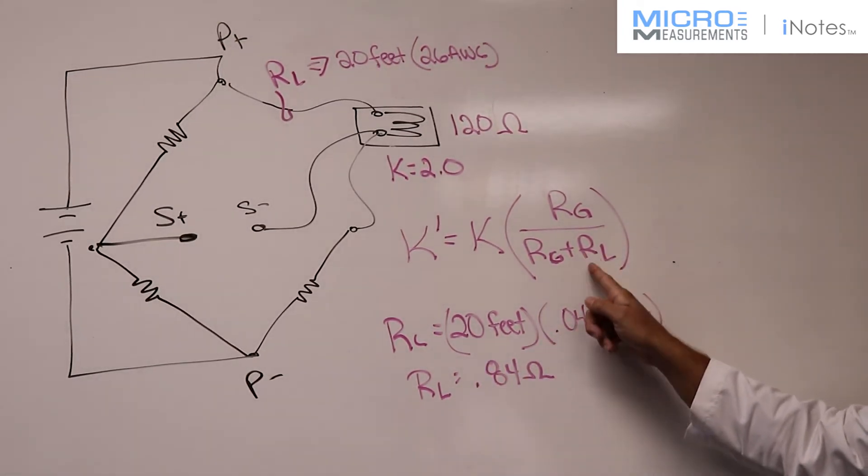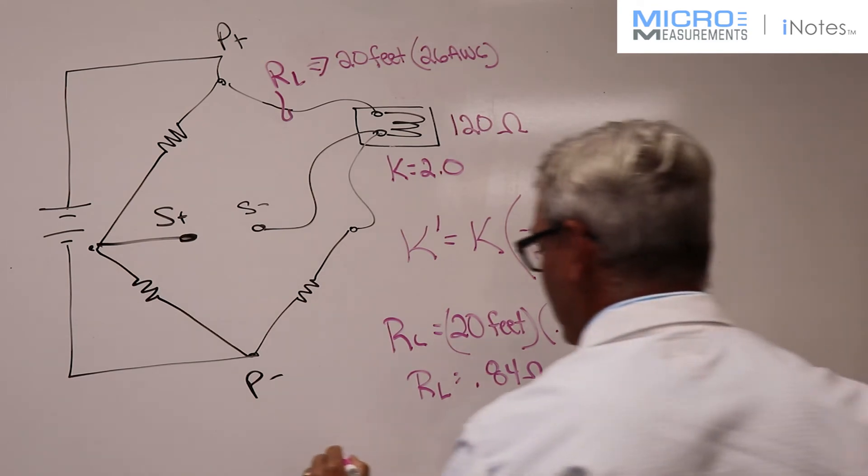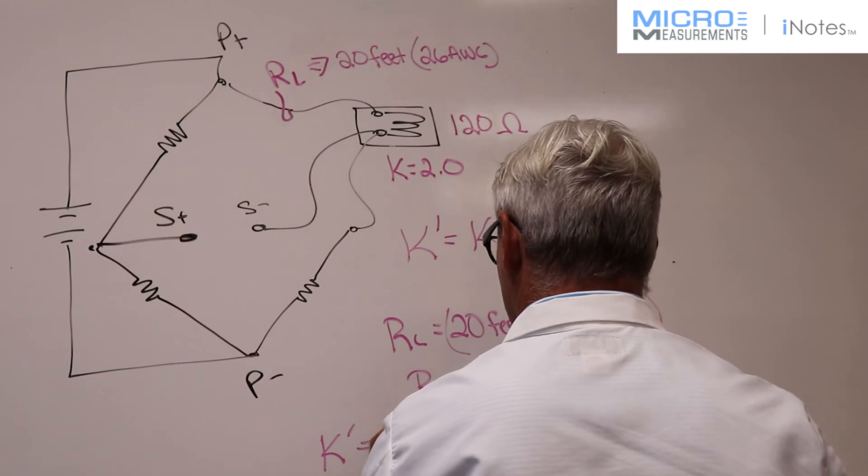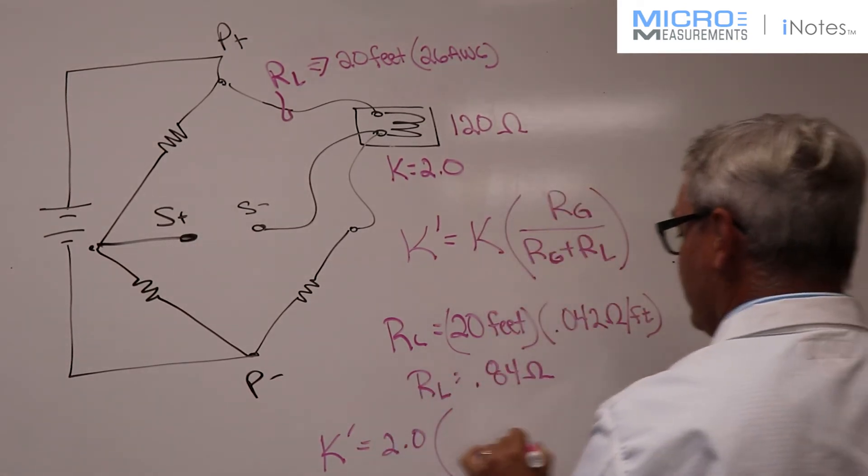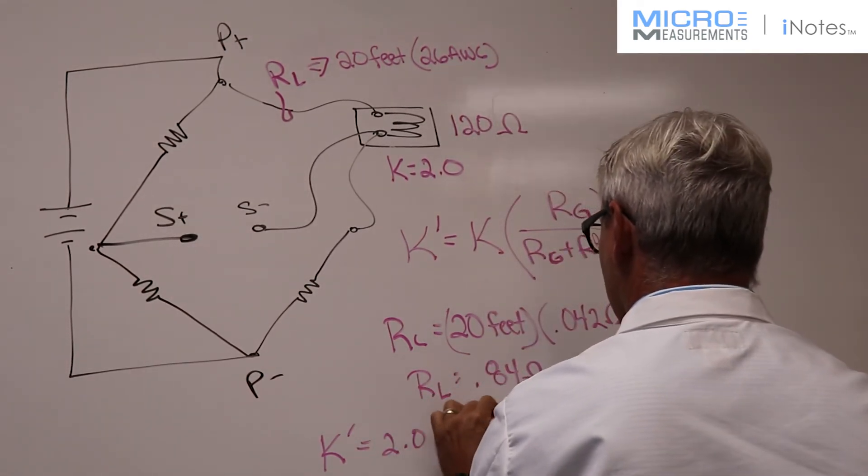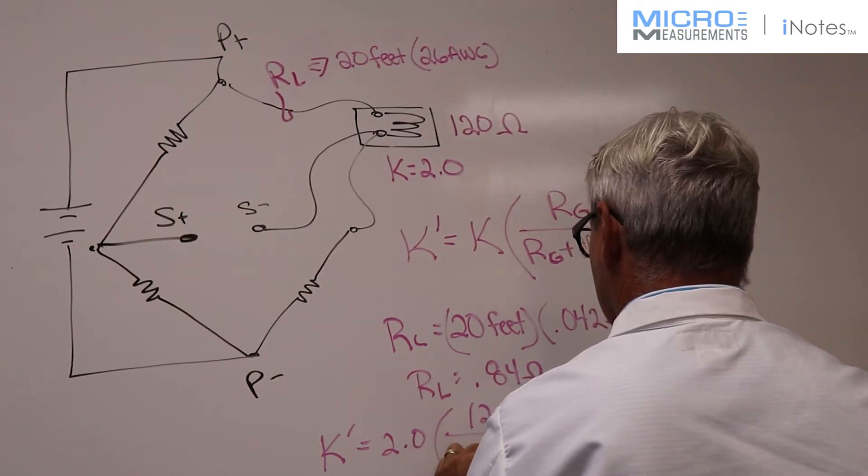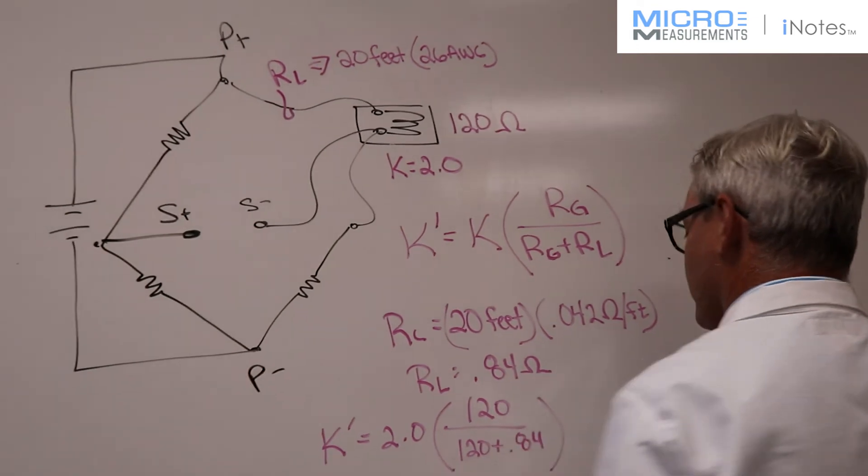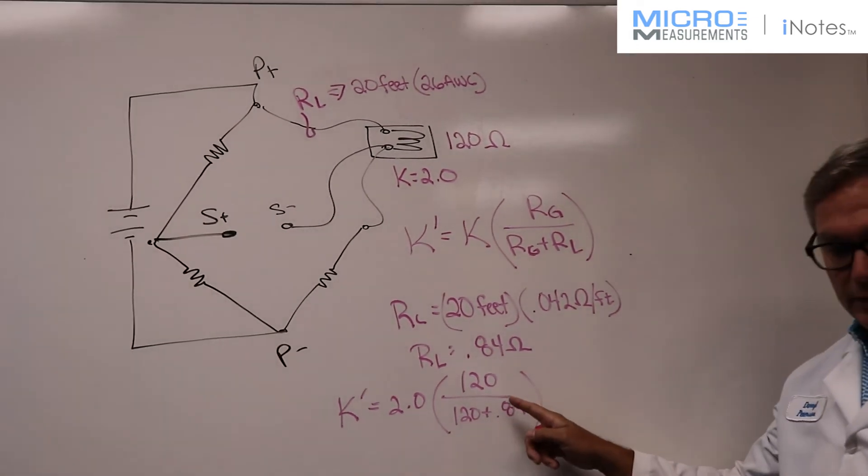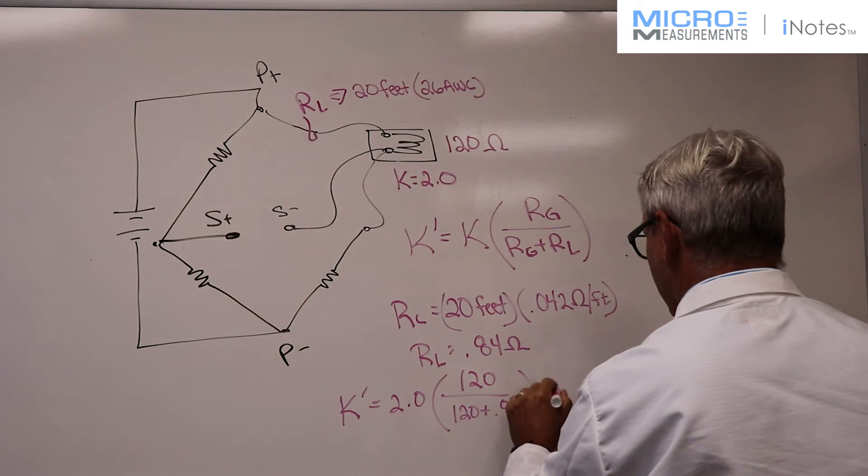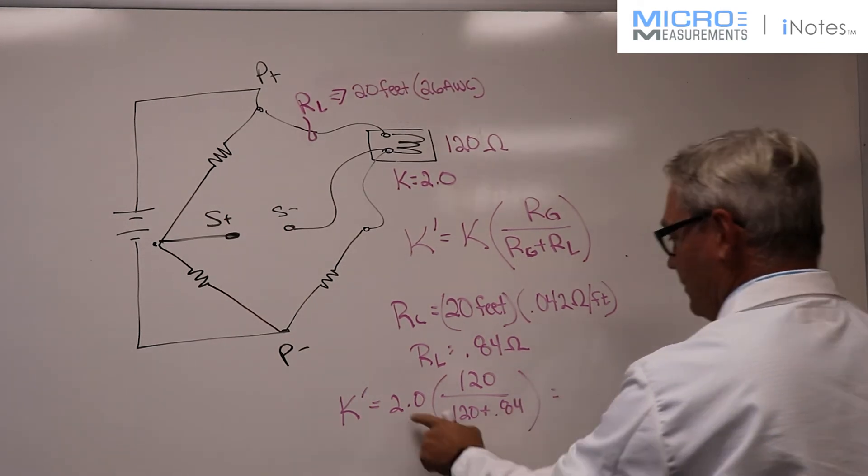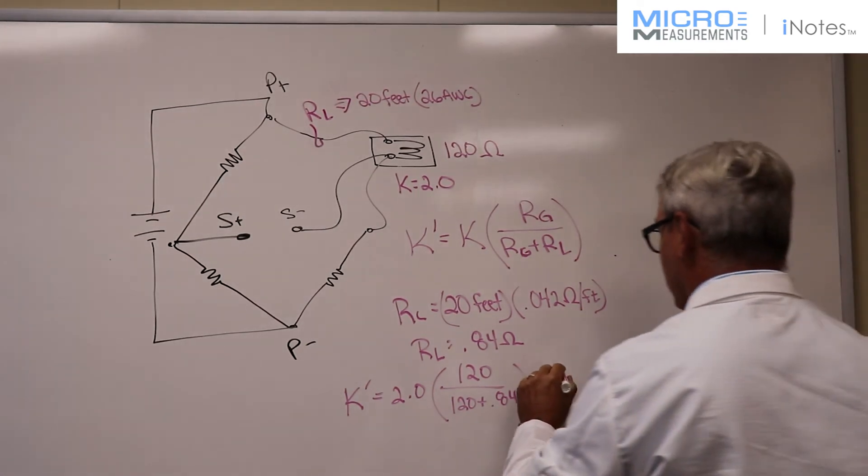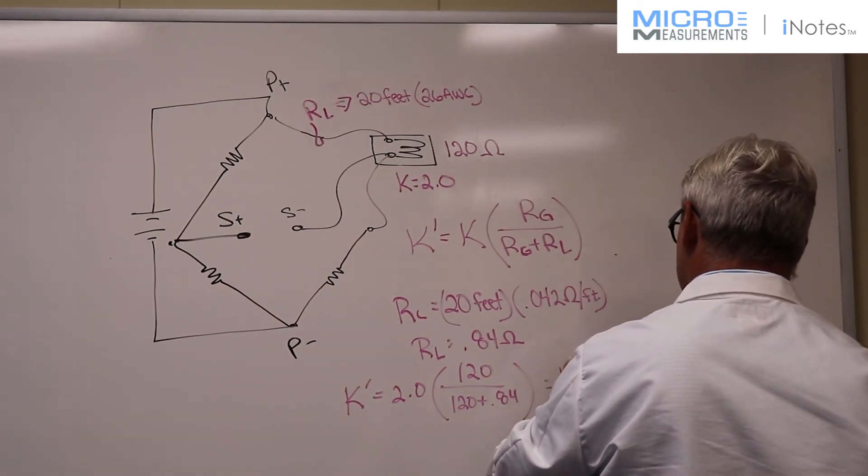Now we take this, plug this into our equation. We've got K prime is equal to 2.0 multiplied by 120 over 120 plus 0.84. This ratio works out to be 0.993, multiply that times two. We're left with a gauge factor equal to 1.986.